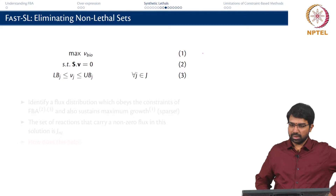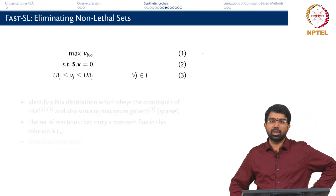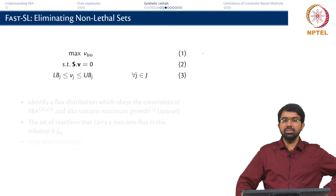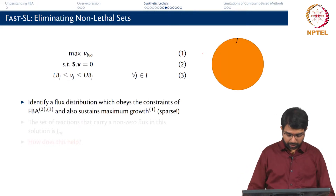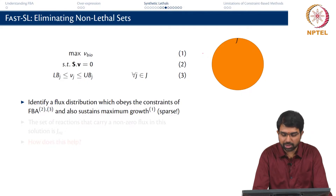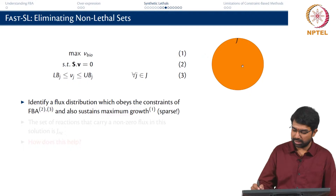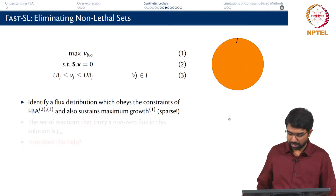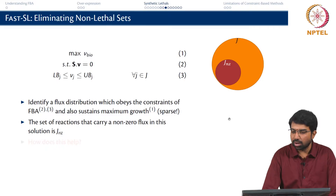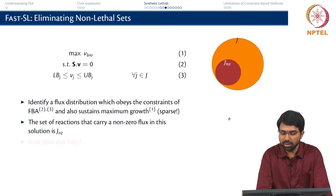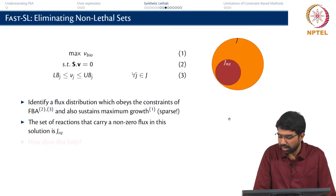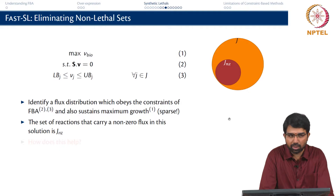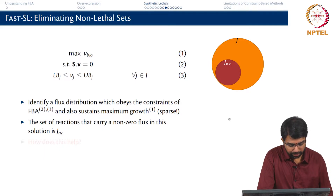This is our good old linear program. What is FBA? Maximize V biomass such that SV equals 0, subject to some lower bounds and upper bounds for all reactions. We then identify a flux distribution which obeys the constraints of FBA and also sustains maximum growth. Let us say J is the set of all reactions. The set of all reactions that carry a non-zero flux in a given FBA solution, let us call that JNZ for non-zero — this is a smaller subset of J. In fact, this diagram is drawn to scale for E. coli.